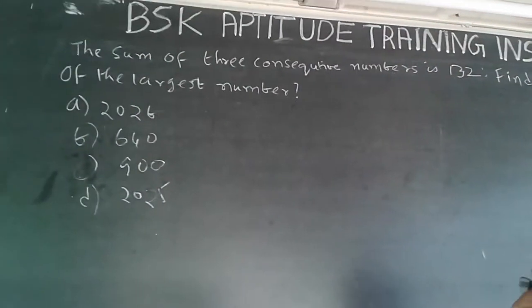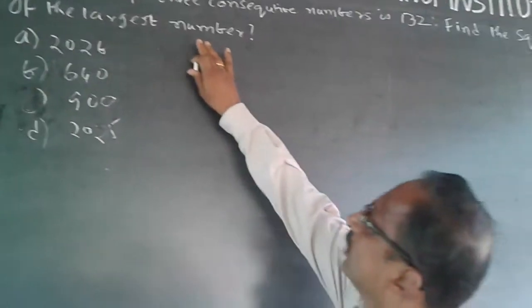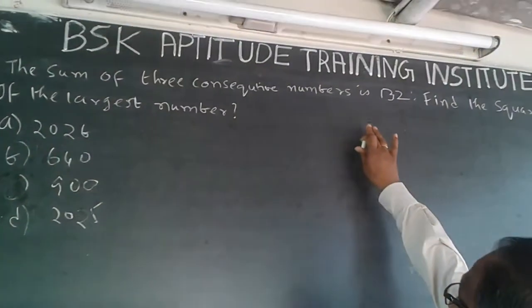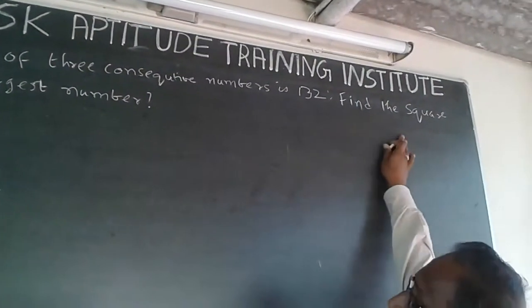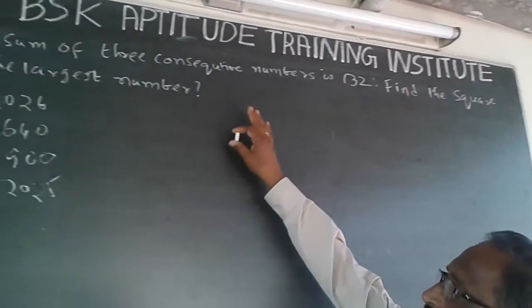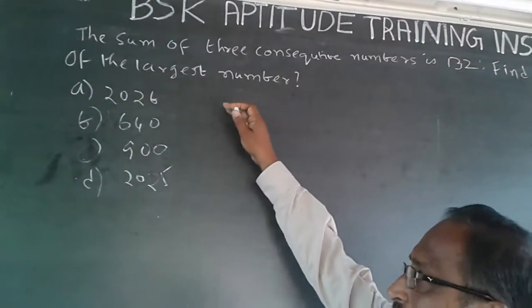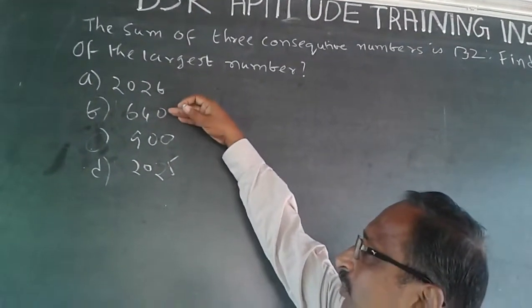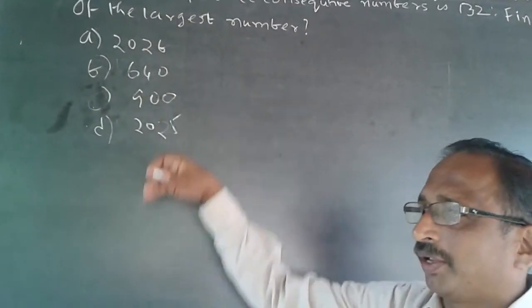This is an Arithmetic Progression problem. The question is: the sum of 3 consecutive numbers is 132. Find the square of the largest number. The options are 2026, 640, 900, and 2025.